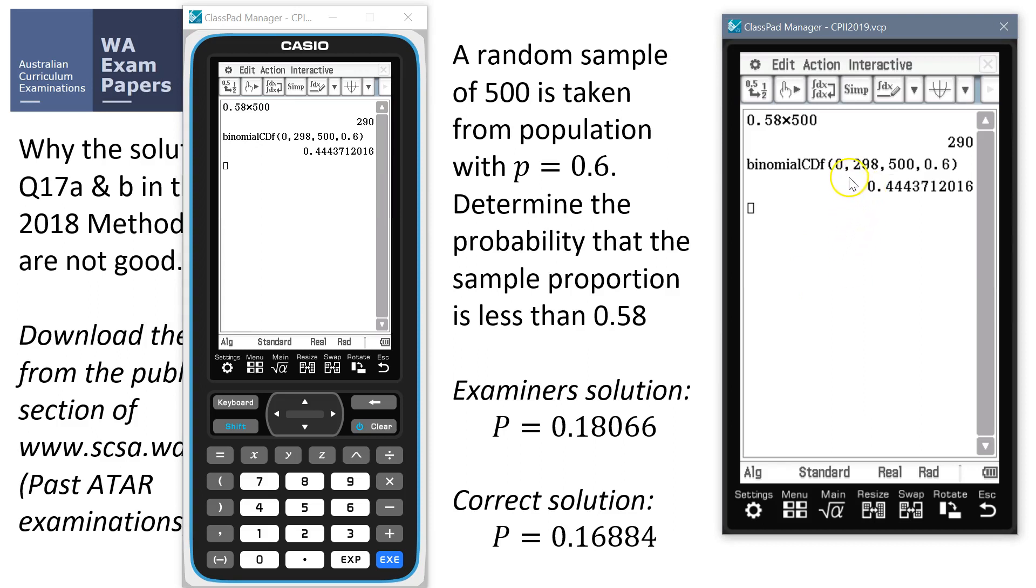289. Did I say a little bit of dyslexia creeping in there? There it is. So this is actually the correct solution. 0.16883 or rounded up a bit to 4. So that's the correct.